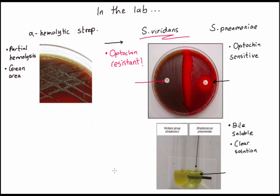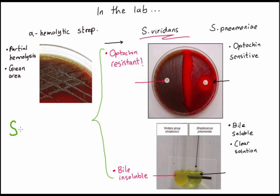Strep viridans is basically the total opposite of Strep pneumoniae — it's bile insoluble, so if you mix it in a bile solution the solution remains turbid; the bacteria are still alive in there. These two results confirm that we have a sample of Strep viridans.